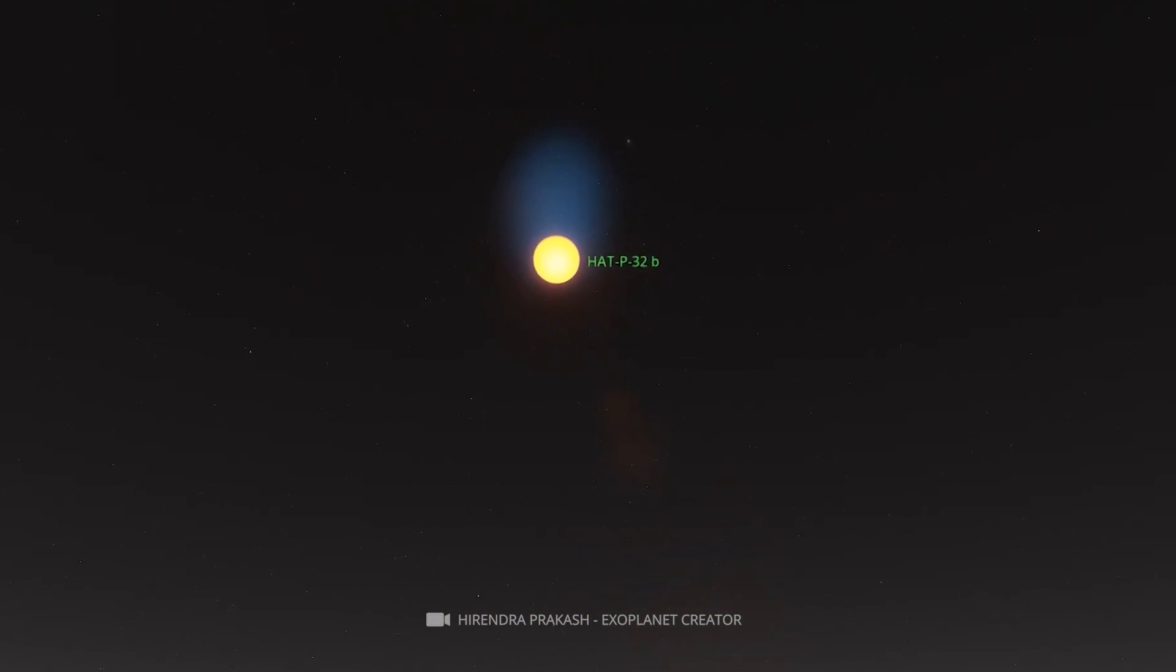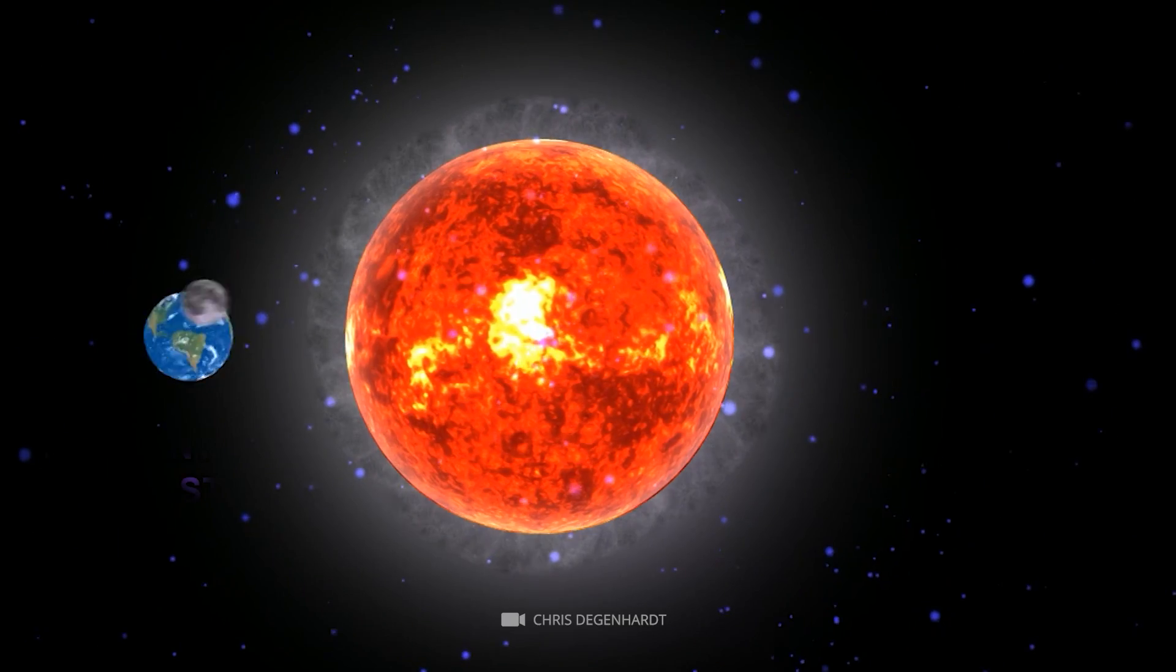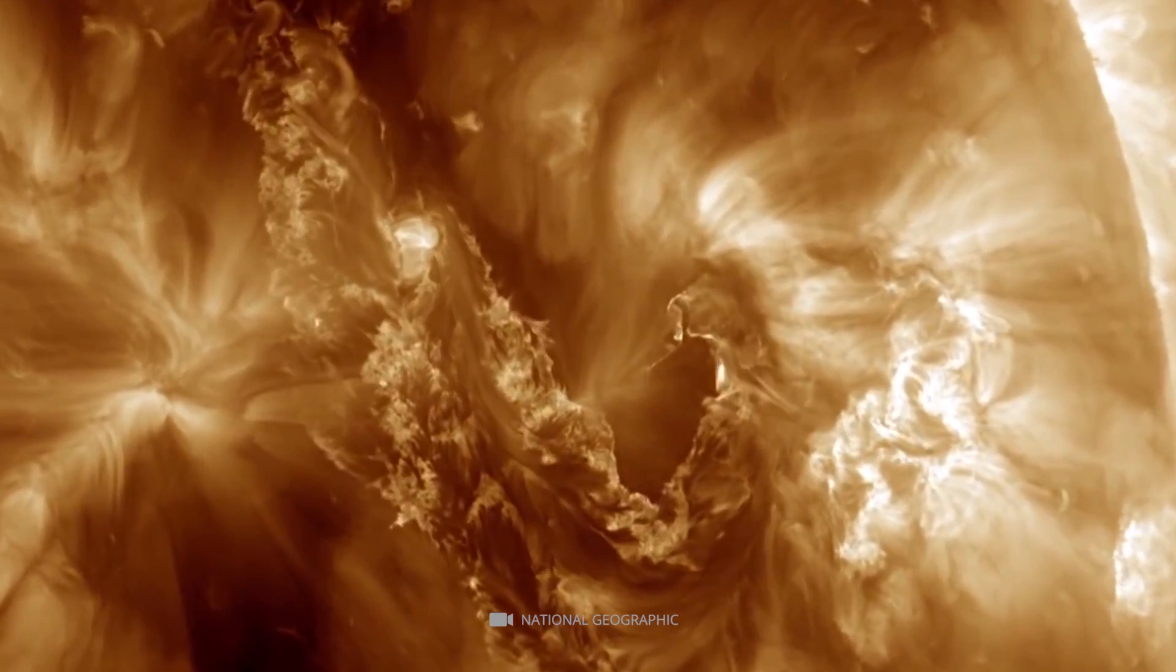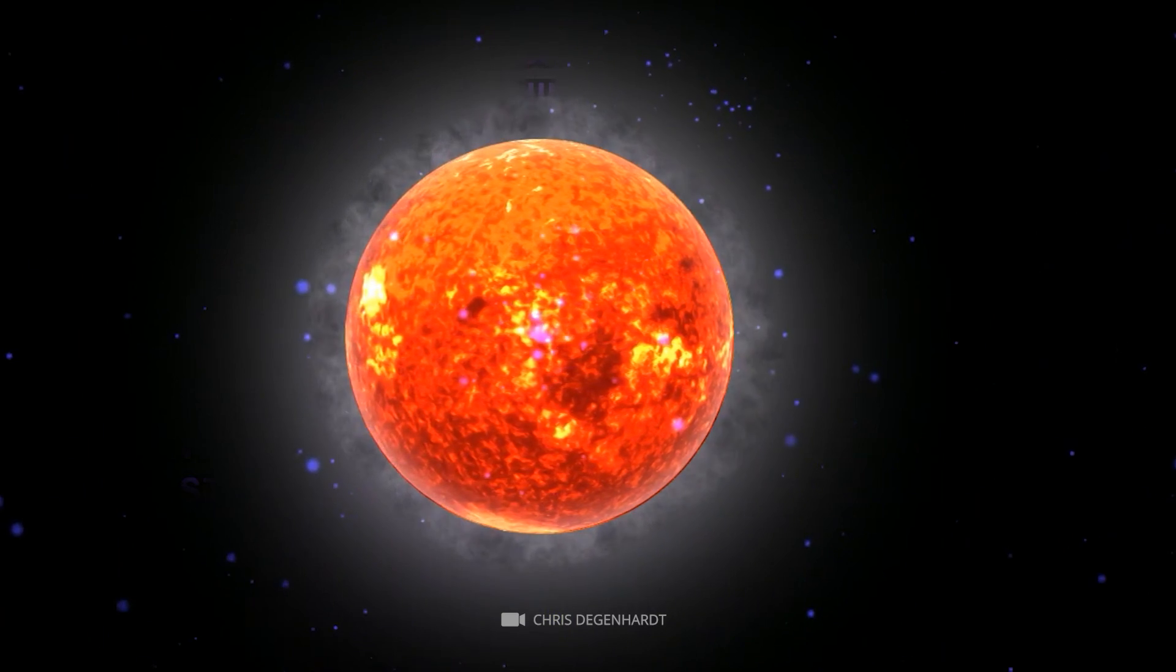Finally, HAT-P32b also has an estimated age slightly younger than our own Sun at 4 billion years old, compared with 4.6 billion years, respectively. This makes it unique amongst other exoplanets since they tend to have much older ages.